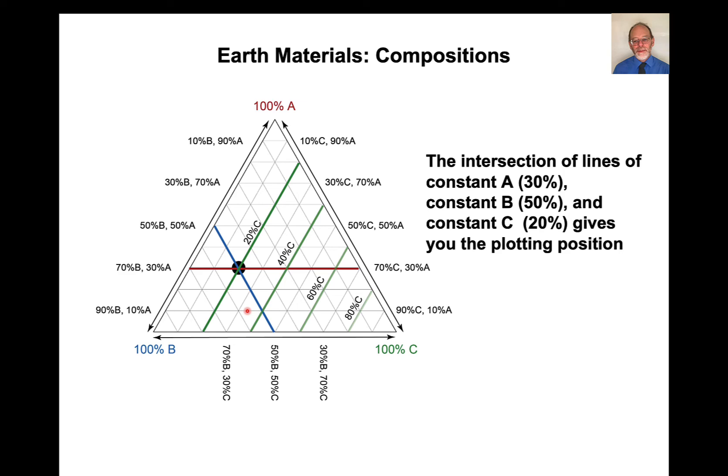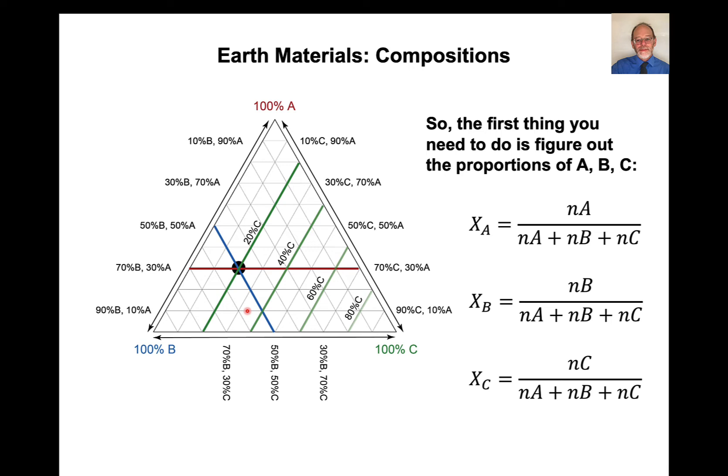Now the intersection of the lines of constant A, constant B, and constant C gives you the plotting position. So here, the mole fraction of A is given by the number of moles of A divided by number of moles of A, number of moles of B, number of moles of C. Similarly for mole fraction of B, or the percent of B, and the mole fraction of C, or the percent of C. And that's the first thing you need to figure out. So if I have 30% A, that defines this line. If I have 20% C, I have this line. And it is the intersection of these lines that defines the plotting position.